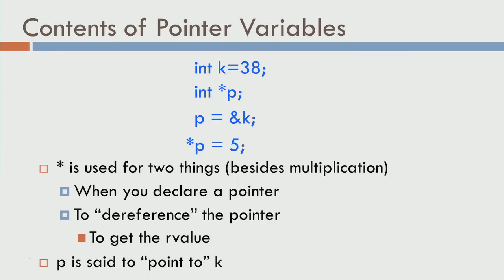In this module, we will see a little bit more details on pointers. Let us go back to the code we saw earlier: int k equals 38, int star p, p equals ampersand of k, star p equals 5. One thing I did not emphasize earlier is this notion of asterisk — what is it used for. You can see that it is used in two places: as int star p, and as star p equals 5. Both are related to pointers; the asterisk symbol is used in two connotations.